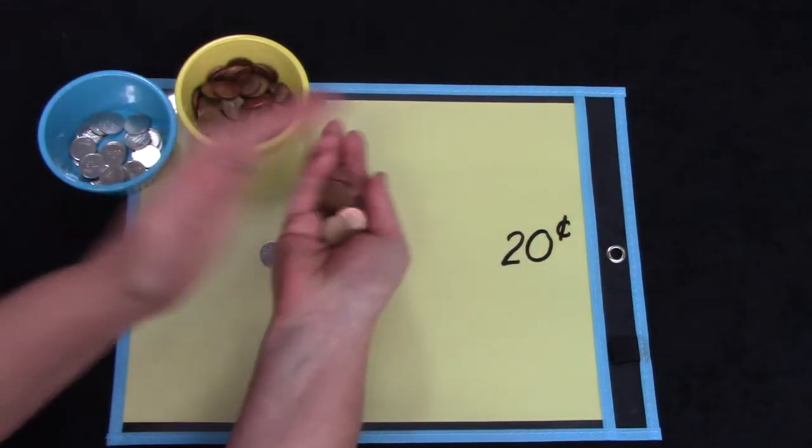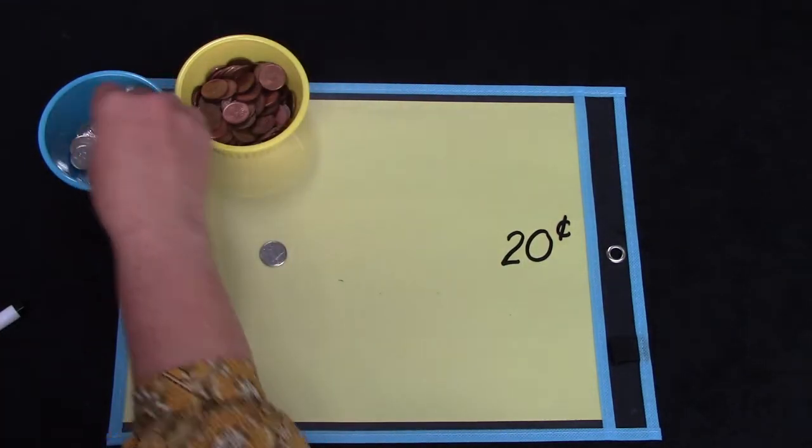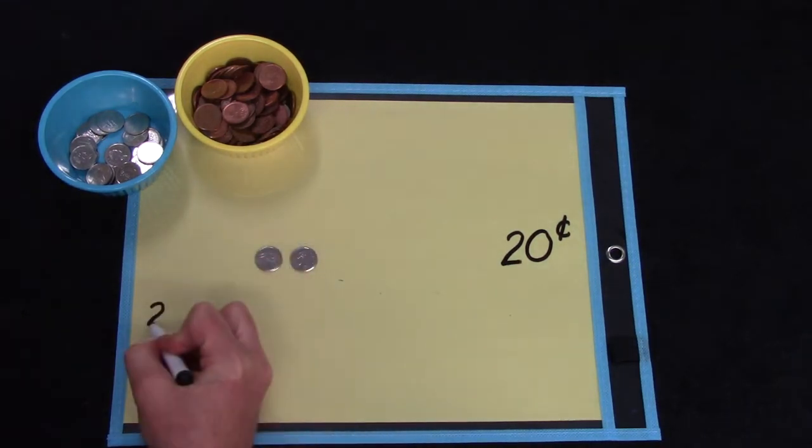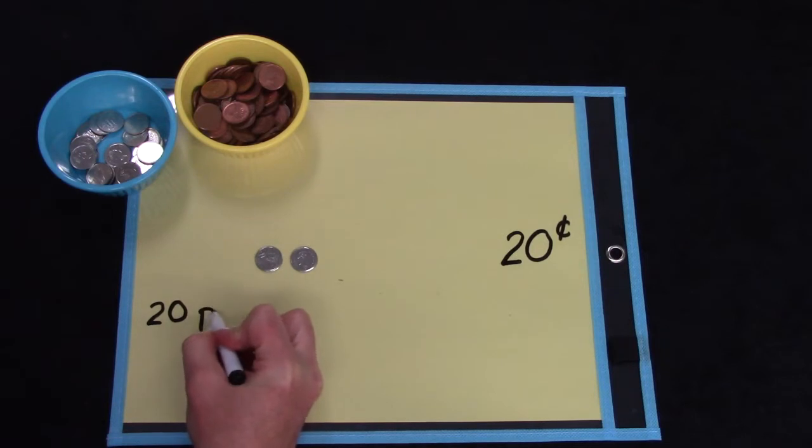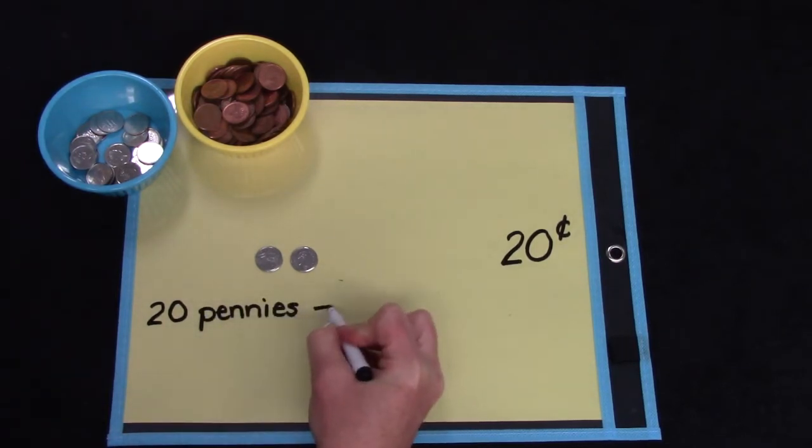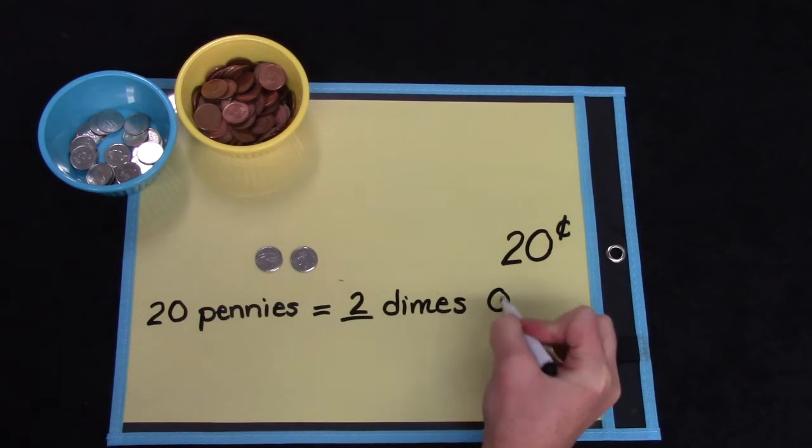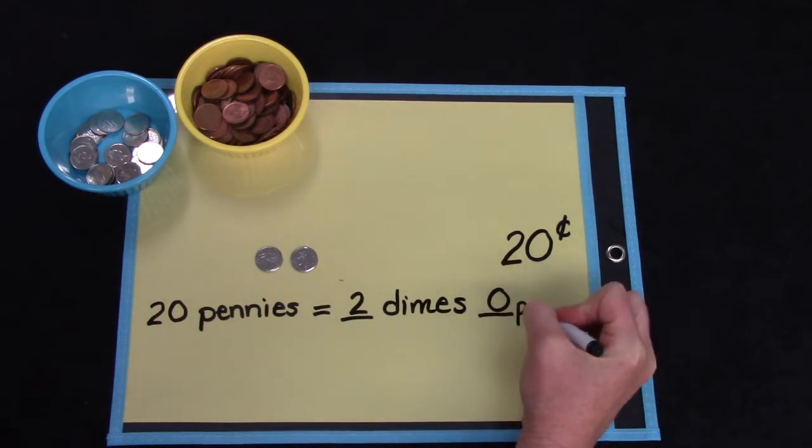I can trade these 10 pennies for another dime. 10, 10, 20. 20 pennies equals 2 dimes and 0 pennies.